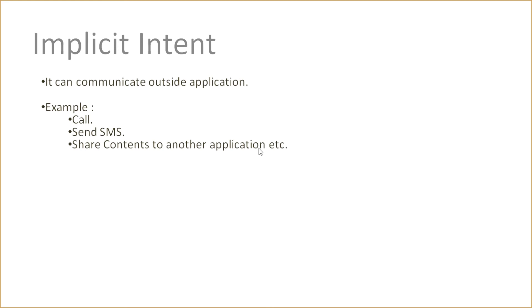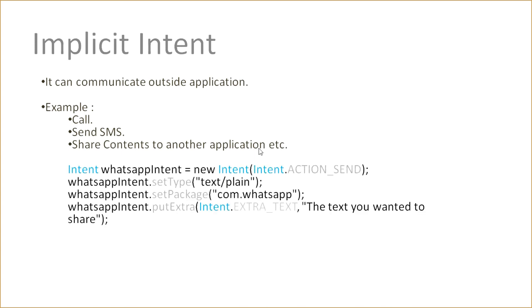When we want to call someone, send an SMS, or share content between another application outside our application, we have to use implicit intent. When we use implicit intent, we also create an object of our Intent, and we have to set the type of the intent and the package name. Suppose we want to share text via WhatsApp — we set the package name of WhatsApp. Then using the put extra method, we pass the type of content and the content we want to share. This is our implicit intent example. So basically, Intent is of two types: implicit intent and explicit intent.